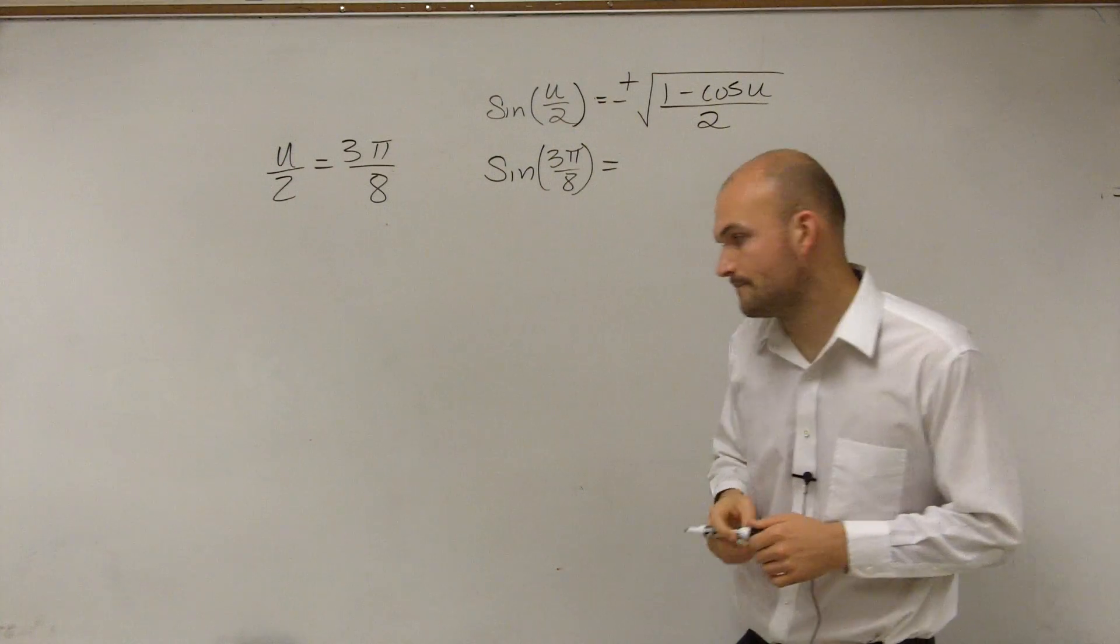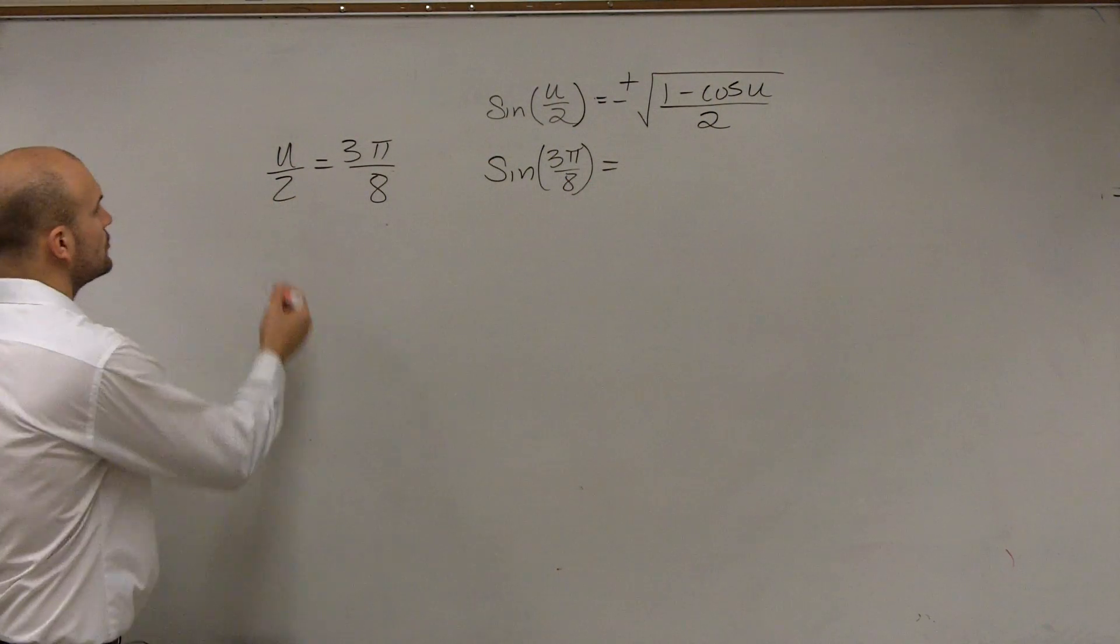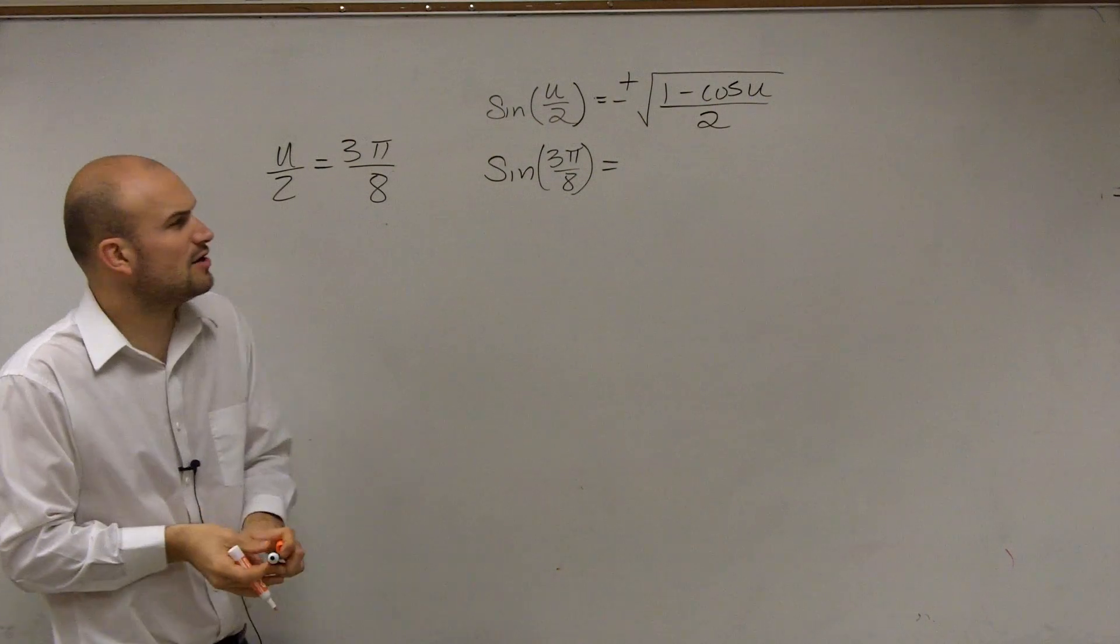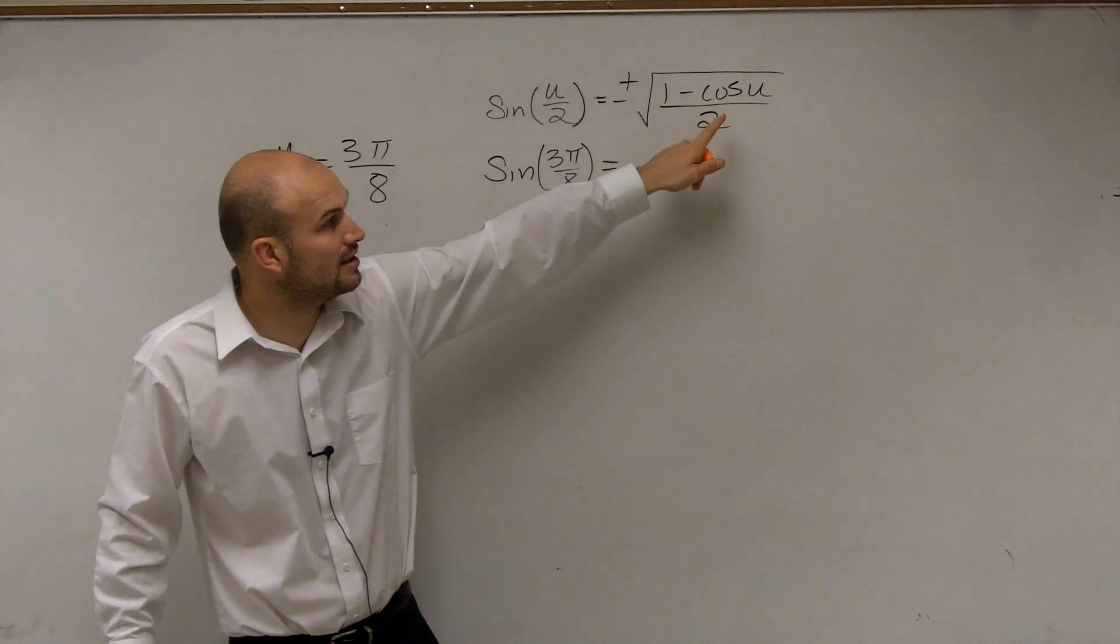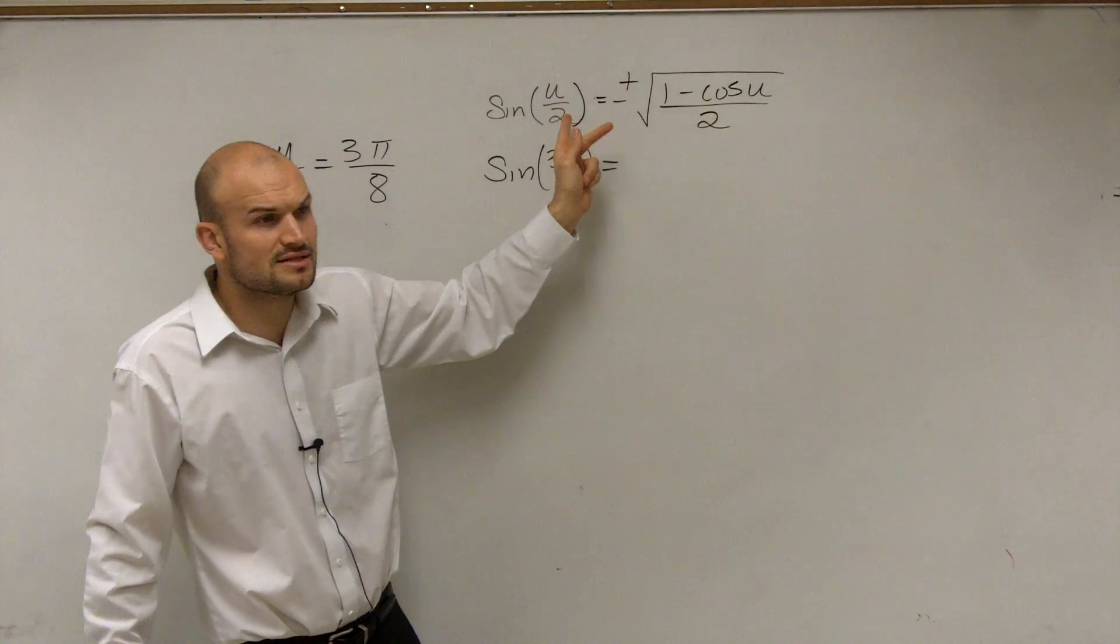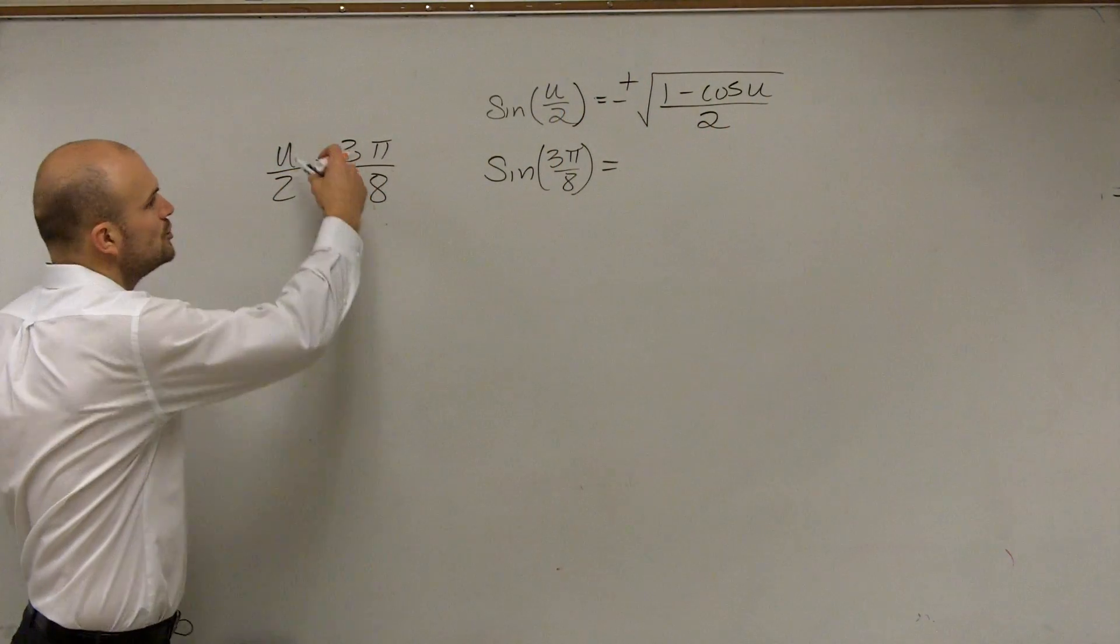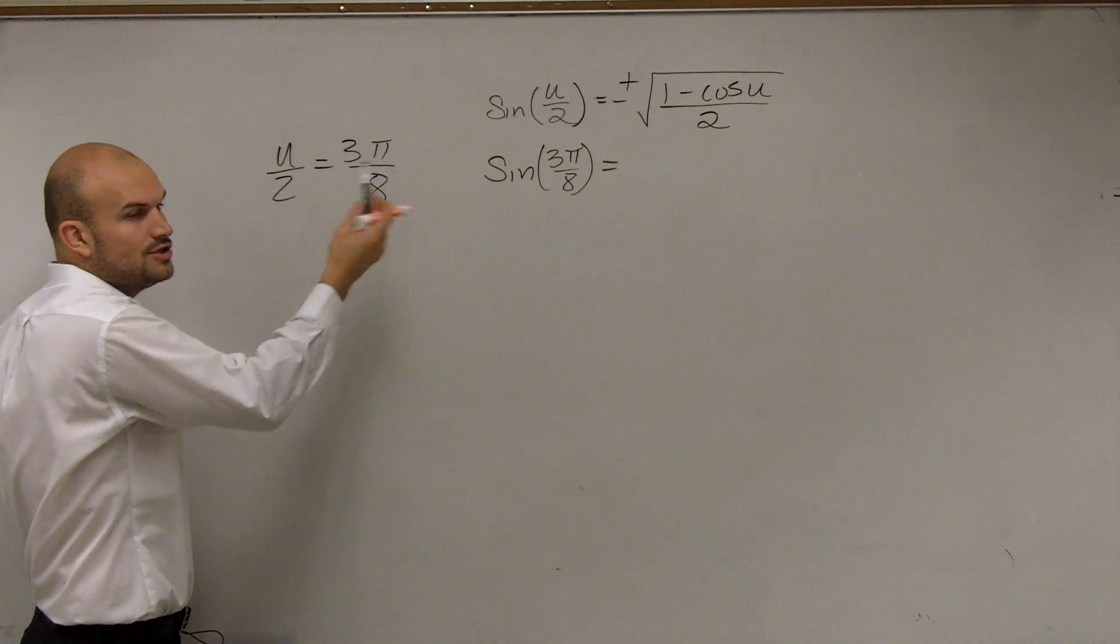So now the next step is, obviously, we have to solve for u. Because why do we have to solve for u? Well, if you guys look into the formula, that's not asking us to find the cosine of u divided by 2, is it? It doesn't say u divided by 2. It says, just tell me what the cosine of u is. So if we know u over 2, what is u?